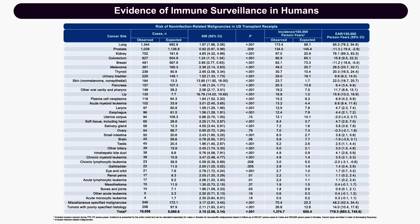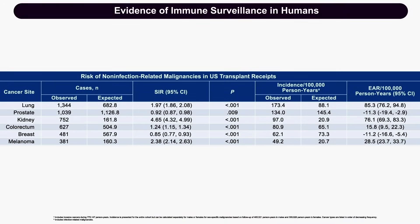Evidence from transplant patients provided a hint of a causative relationship. Patients undergoing organ transplant receive significant immunosuppressive treatment to dampen the adaptive immune system. Although initially thought to increase only virally related cancers, more careful epidemiologic studies have demonstrated that dampening the adaptive immune system actually increases the frequency of a wide variety of cancers, including lung cancer, colorectal cancer, skin cancer, and melanoma—suggesting that T cells play an important role in immune surveillance and preventing the outbreak of malignancy.